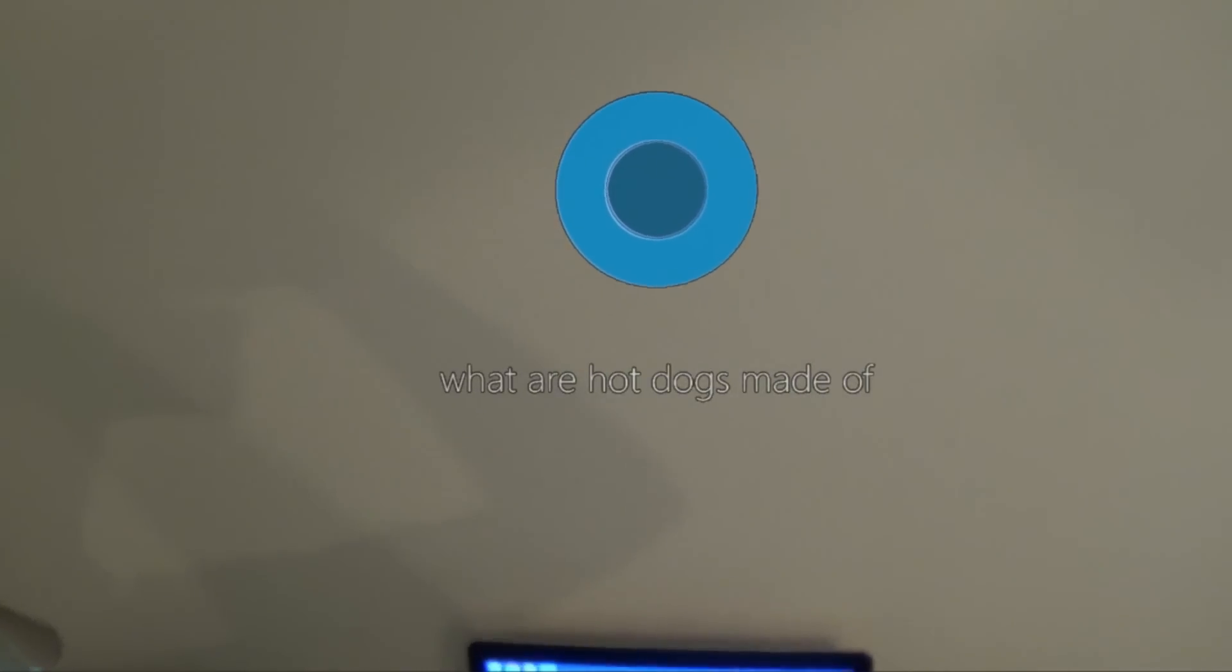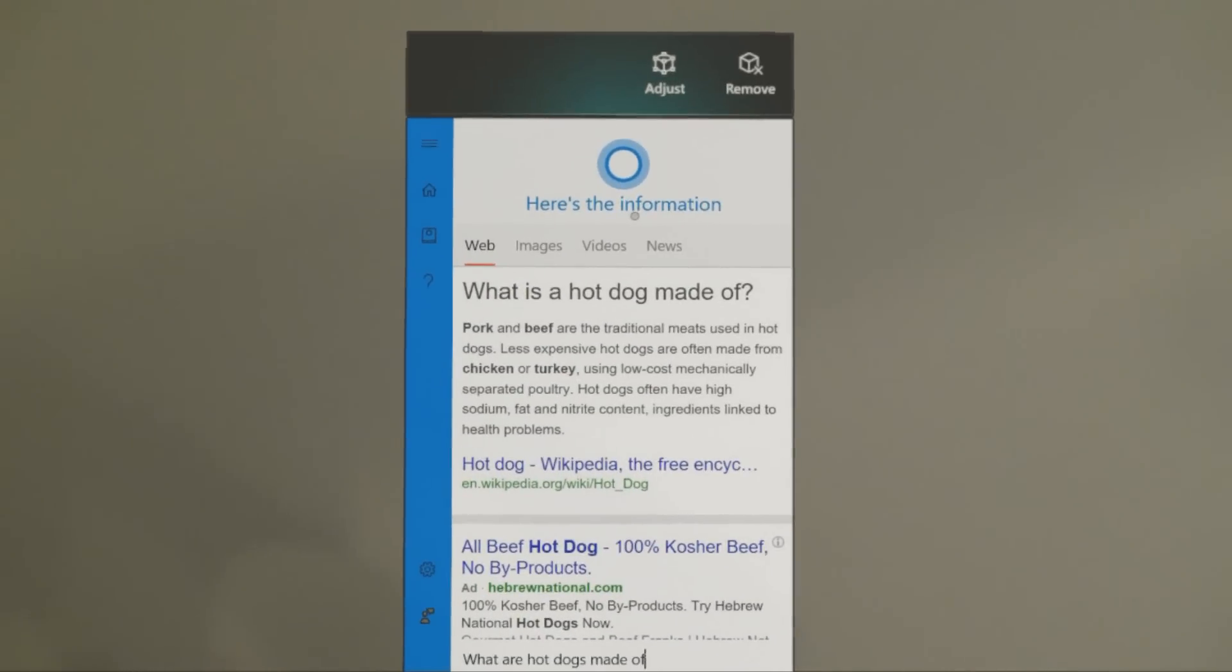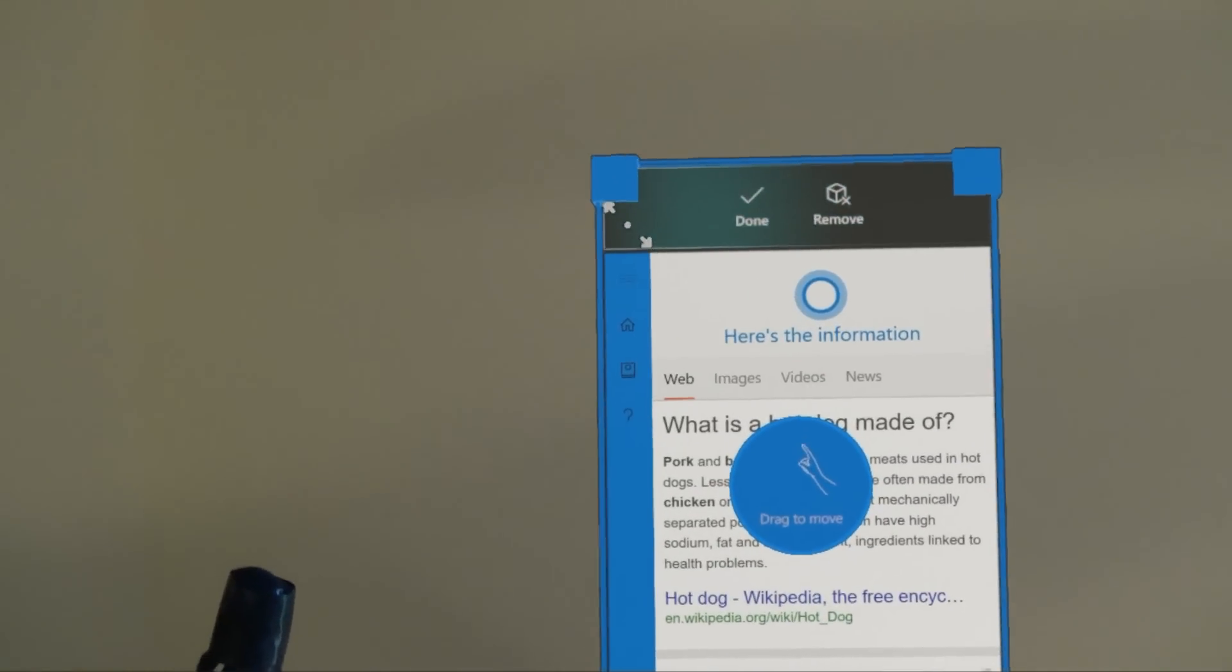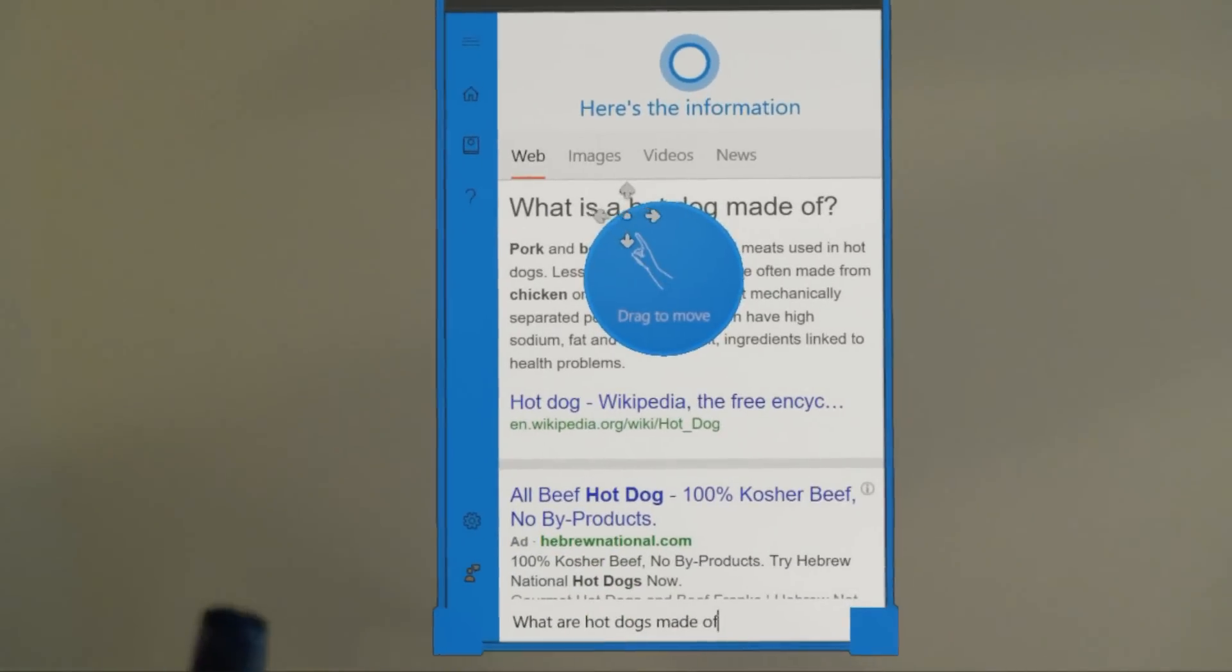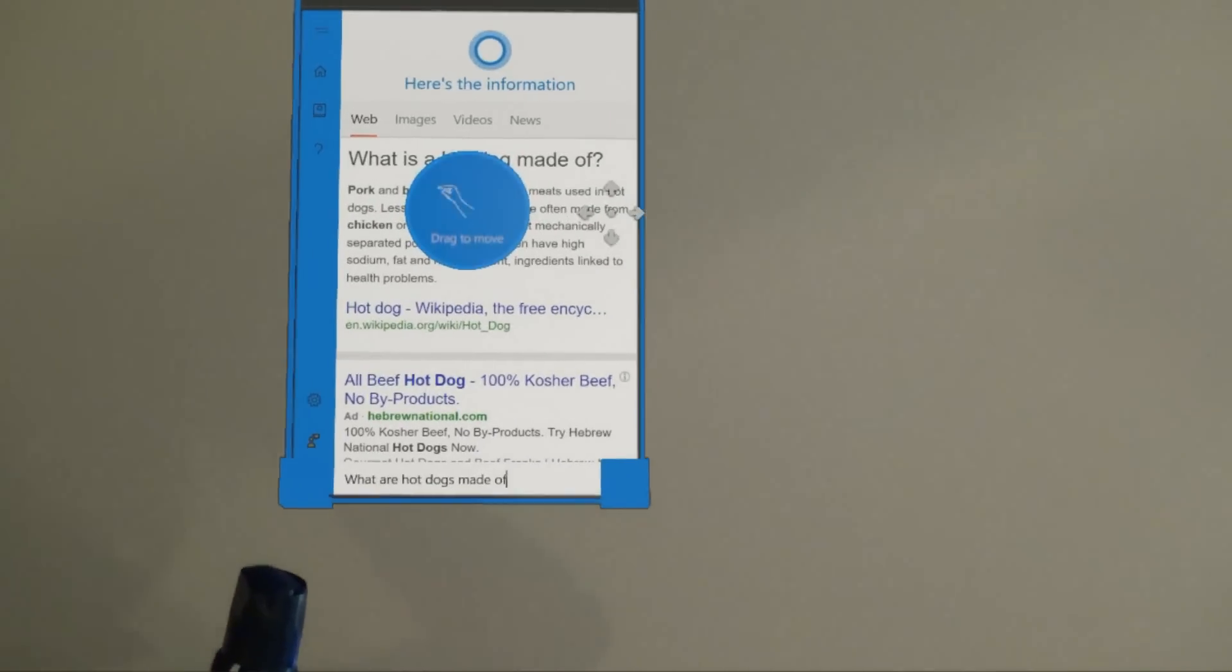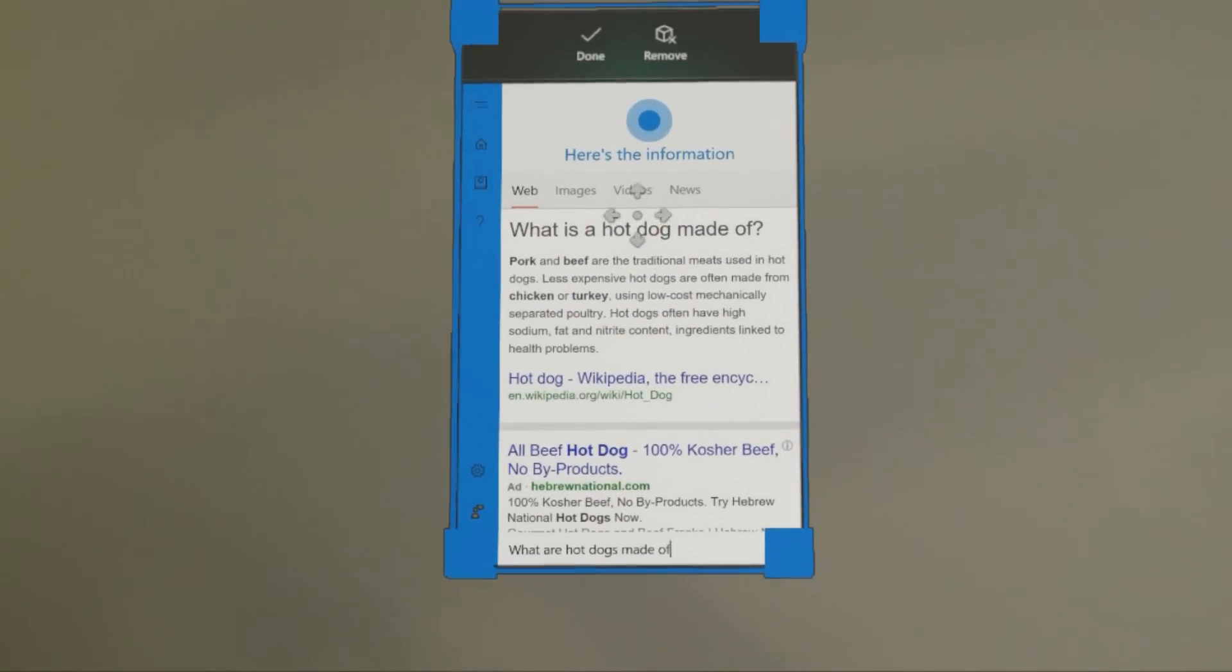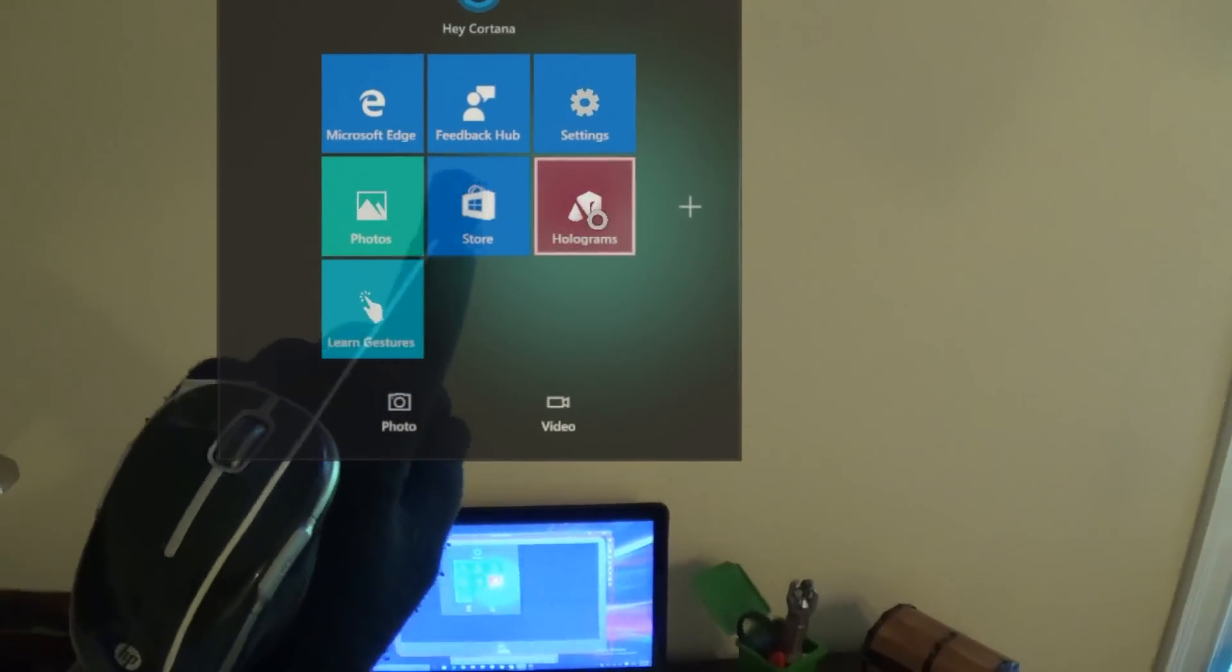What are hot dogs made of? Truly one of the greatest questions gripping our nation, what is a hot dog made out of? But you can see I can use the mouse as well as gazing to change where I place a web page. I can make it bigger, I can make it smaller, I can do anything that the HoloLens can do. It might not be perfect, but it works. According to wikipedia.org, pork and beef are the traditional meats used in hot dogs. Huh, who knew?